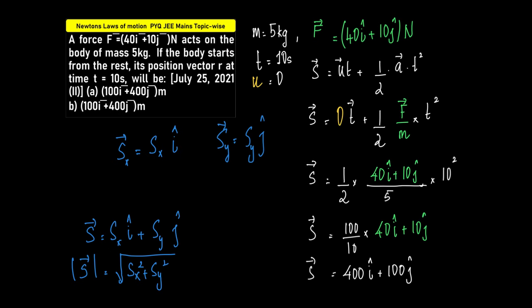Very straightforward question based on the application of equations of motion. We have F is equal to 40i plus 10j. What is S is equal to ut plus half at square all in vector notation.